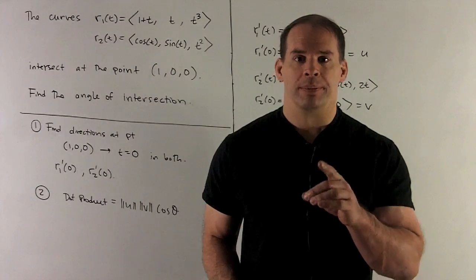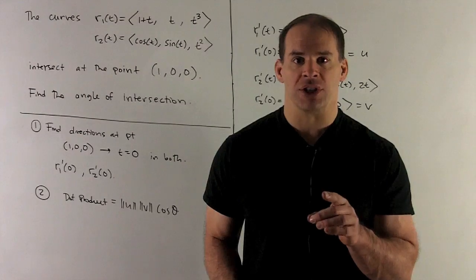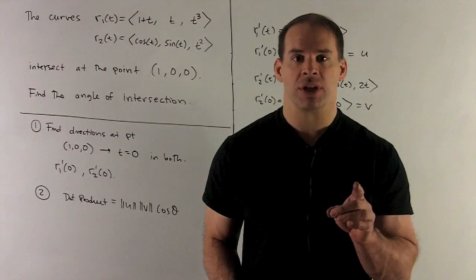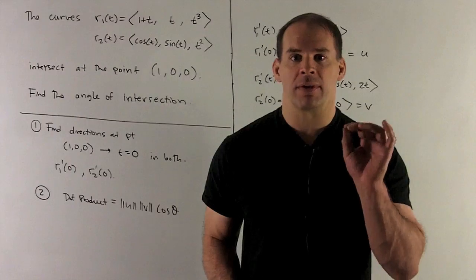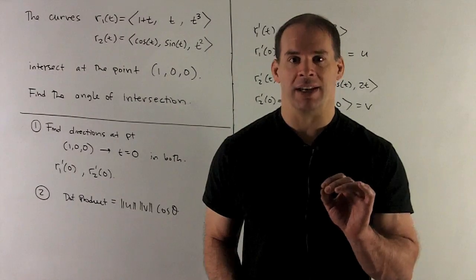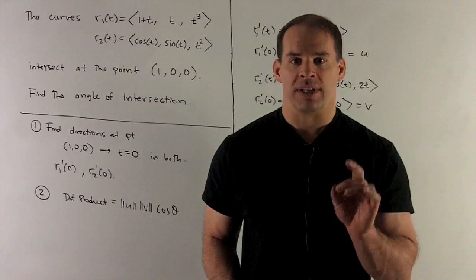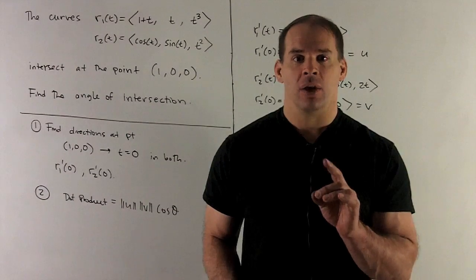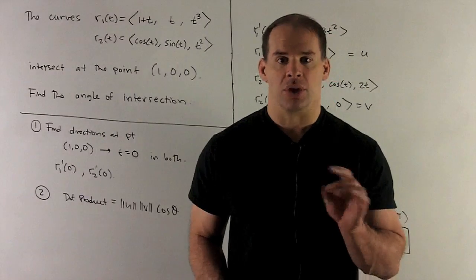Next, if I want the angle of intersection, we're going to need to know about the tangent directions of our curves at our point. So we'll get those by taking the derivative of our functions and then just putting in t equals 0. From there, we'll take the dot product and then we'll see how the dot product gives us the angle. So let's do some work.